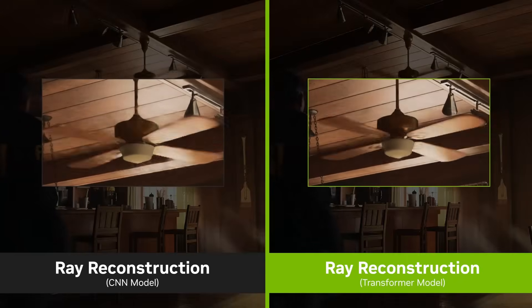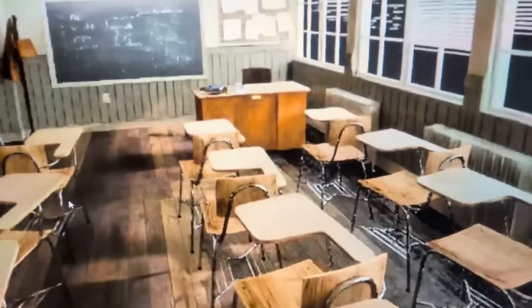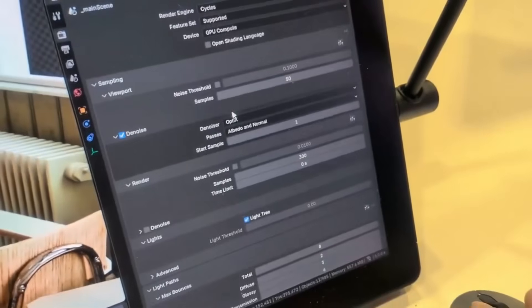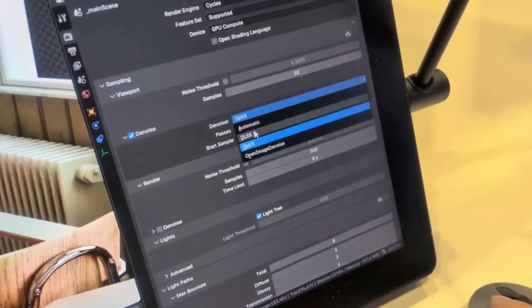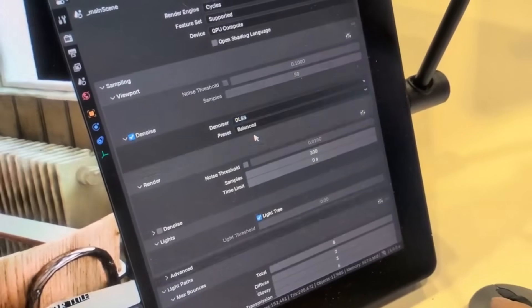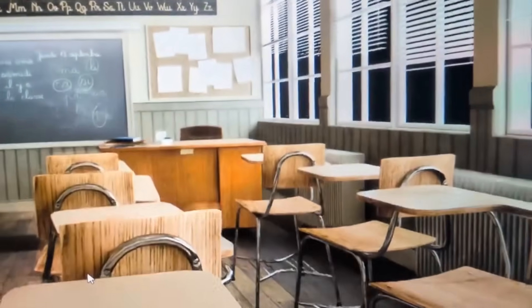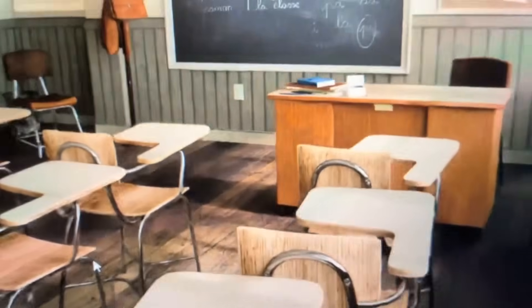Jonathan Lampel made a post about this at SIGGRAPH which is looking pretty nice. By default, this is what you get when rendering with typical Cycles. If you choose to turn on the denoiser and switch it to DLSS, you get your renders in real-time, and this is running in Cycles. Blender Guru also made a video about this which explains it a bit more.